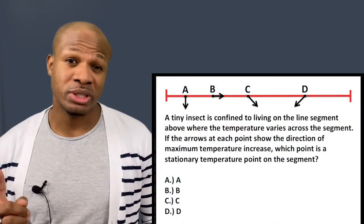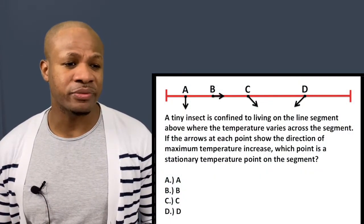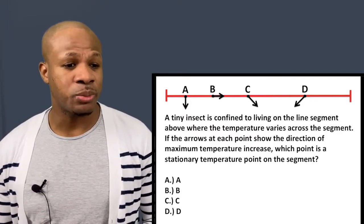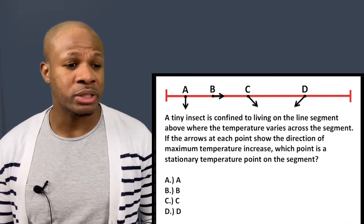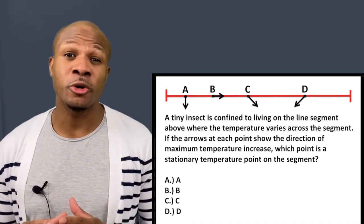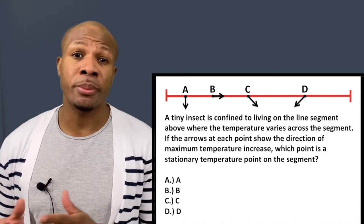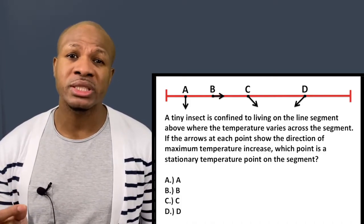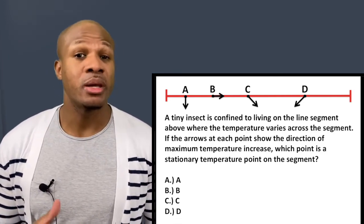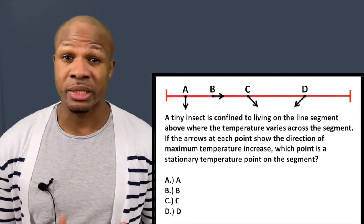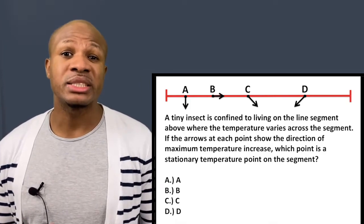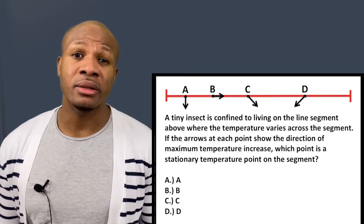Question number one states: a tiny insect is confined to living on a line segment where the temperature varies across the segment. If the arrows at each point show the direction of maximum temperature increase, which point is a stationary temperature point on the segment? Stationary means to remain constant — we need to find the point where temperature does not vary as we move along the segment.